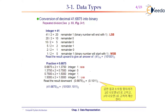Every time when the fraction is multiplied by 2, identify the digit before the decimal point and keep it aside — it could be 0 or 1. All those digits written in ascending order form the fractional binary result.